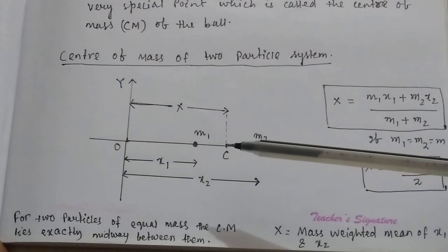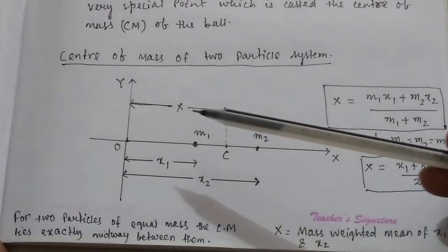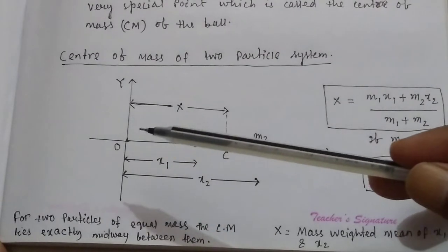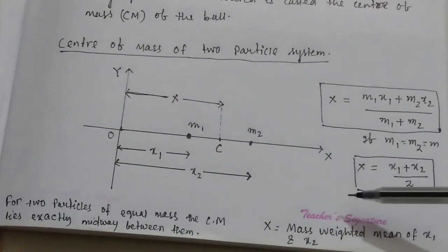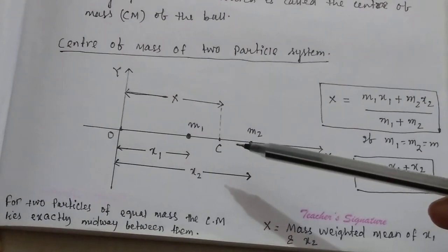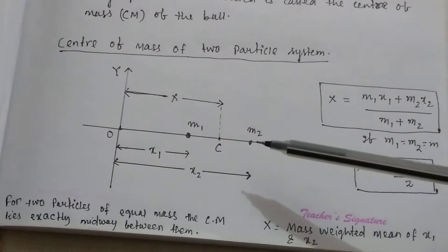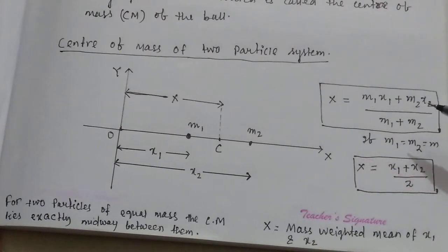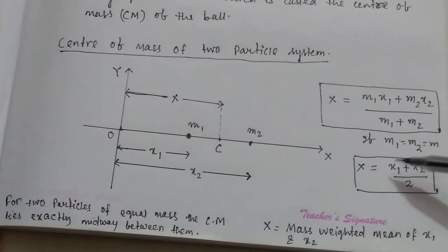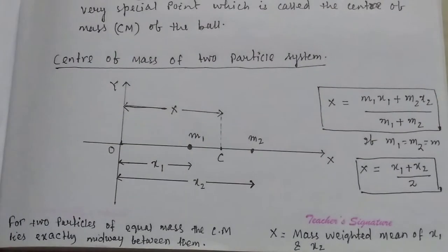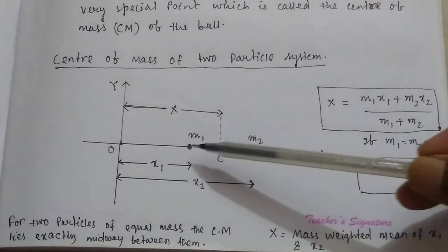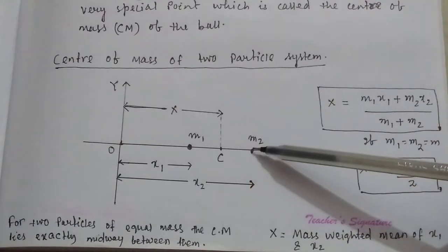Suppose C is the center of mass of the two-particle system, and the center of mass is at a distance x from the center O. To find out the coordinate of the center of mass of the two-particle system, we take the mass weighted mean of x1 and x2, which is M1x1 plus M2x2 divided by M1 plus M2. If M1 equals M2 equals M, then x equals x1 plus x2 divided by 2. That is, for two particles of equal mass, the center of mass lies exactly midway between the two particles.